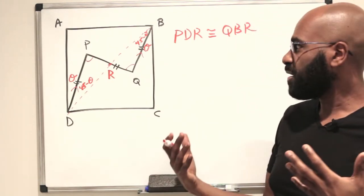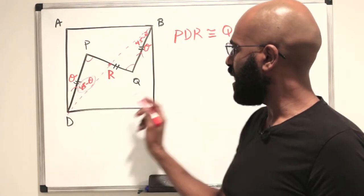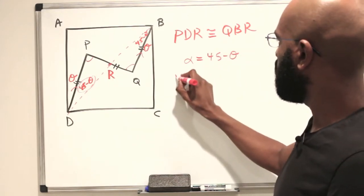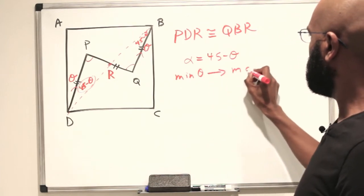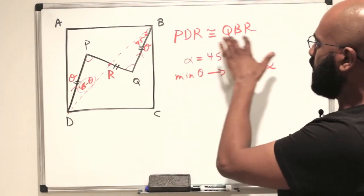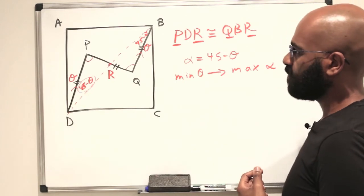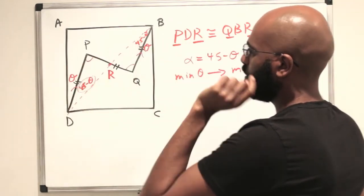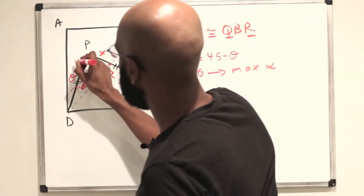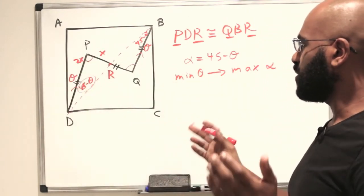Using that congruence, we can figure out more about the situation. Let's label this angle alpha, equal to 45 minus theta. So to minimize theta we should maximize alpha. Since PDR and QBR are congruent, PR and QR have the same length — let's call it x — which means PQ has length 2x, and hence PD also has length 2x.